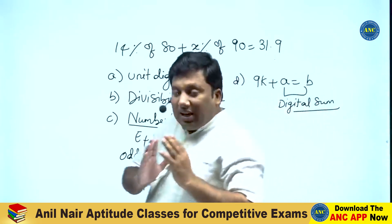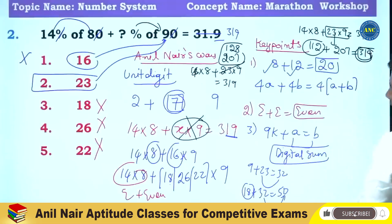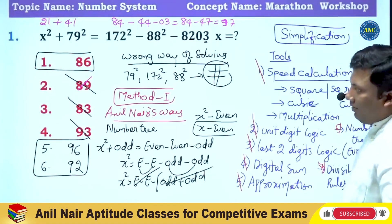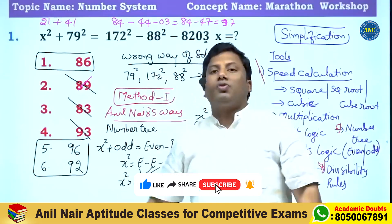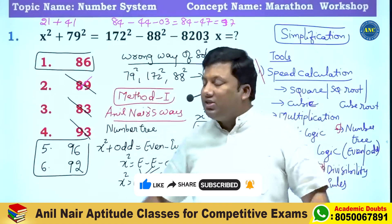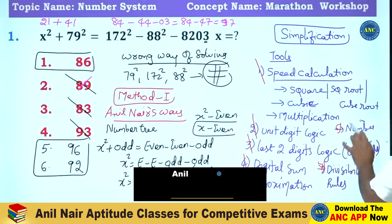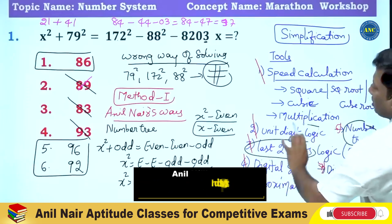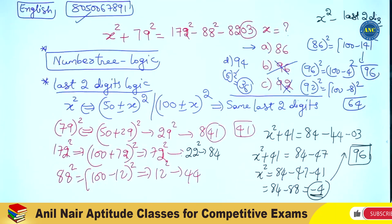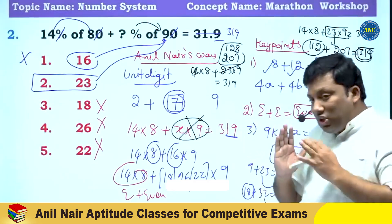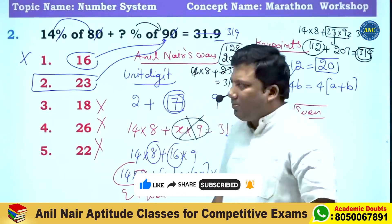There is a reason these two questions were given together. In the previous question, unit digits 6 and 9 can give the same unit digit when squared, so I used last-two-digits logic instead. In this problem I used unit digit logic, digital sum logic, and divisibility rules. Each question requires a proper analysis to determine which concept to apply — that is the key idea.